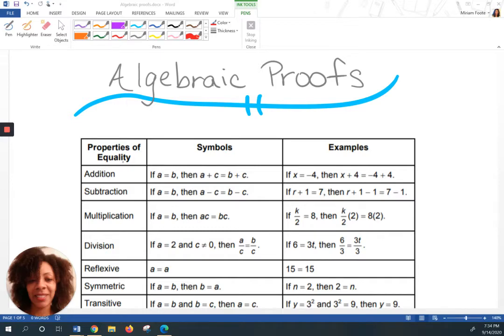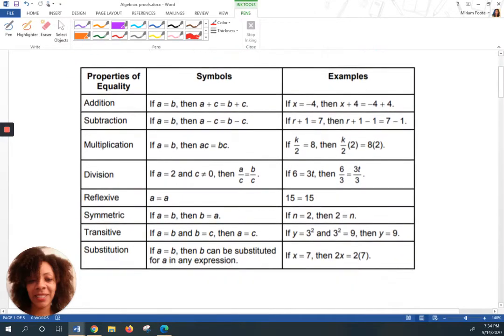Properties of equality has several different categories, ranging from addition, subtraction, multiplication, and division to other maybe not so well-known categories like reflexive, symmetric, transitive, and substitution. You've dealt with substitution before. You probably just didn't realize it was under the properties of equality. There's one more that I'd like to add, which is called distributive property, because that sometimes is used as well.